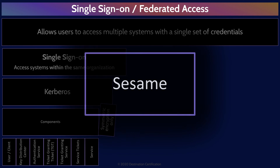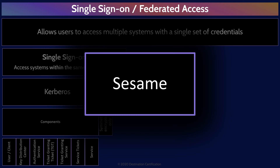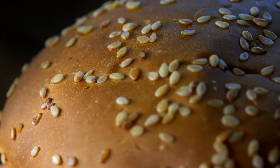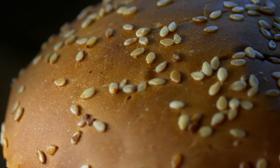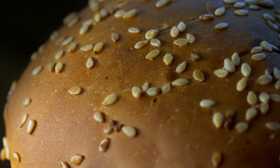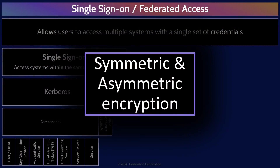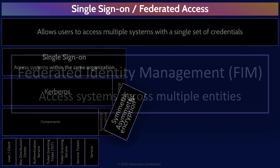There is a second protocol that enables single sign-on capabilities, and you should know a bit about it. It's known as Sesame — as in OpenSesame. Sesame supports not just symmetric cryptography but also asymmetric cryptography, solving the major symmetric key cryptography problems of scalability and key distribution.